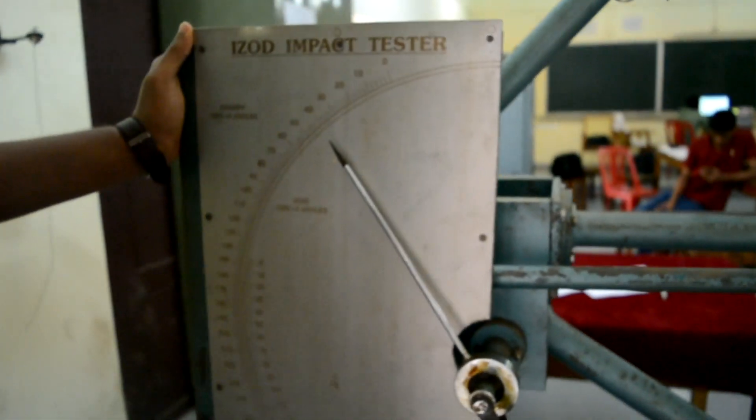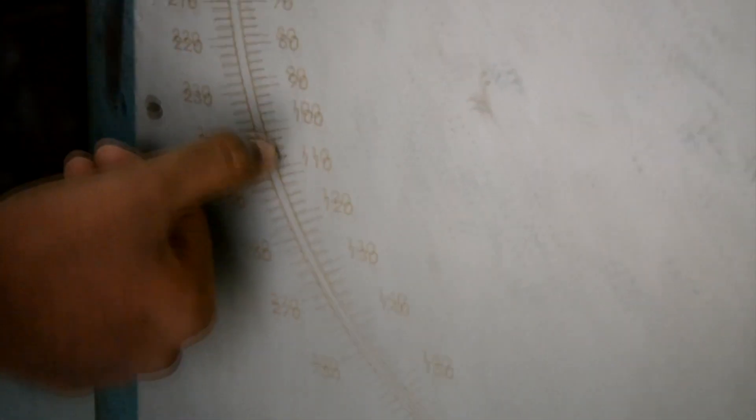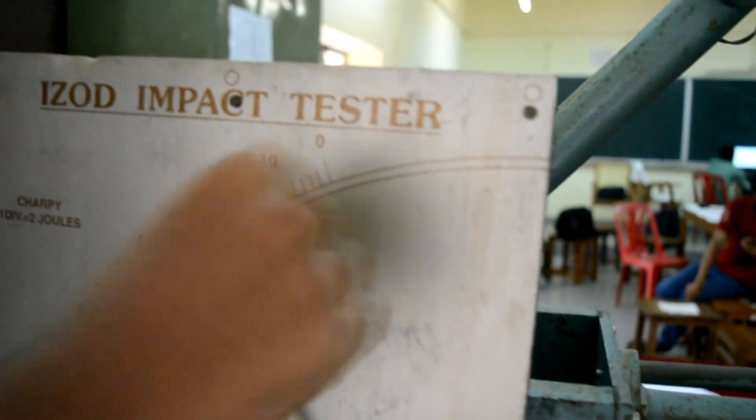After the pendulum strikes the specimen, the final angle of the pendulum will be shown in this dial, where the angle will be calculated.